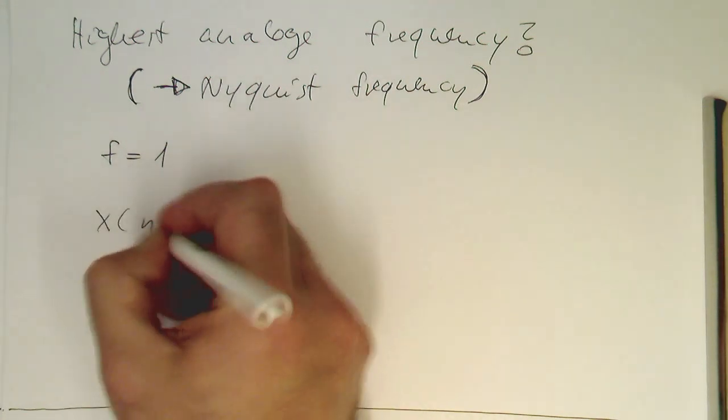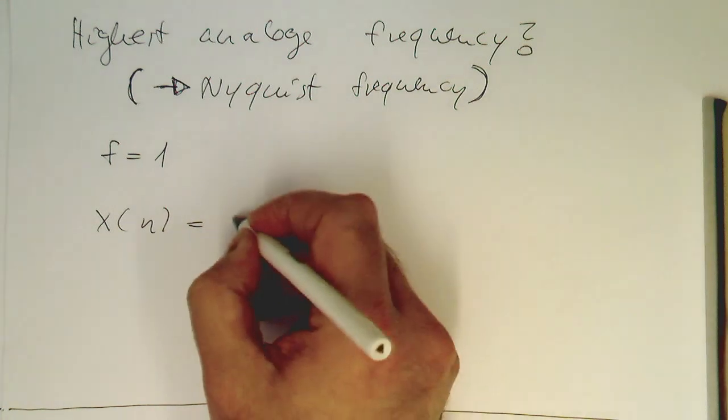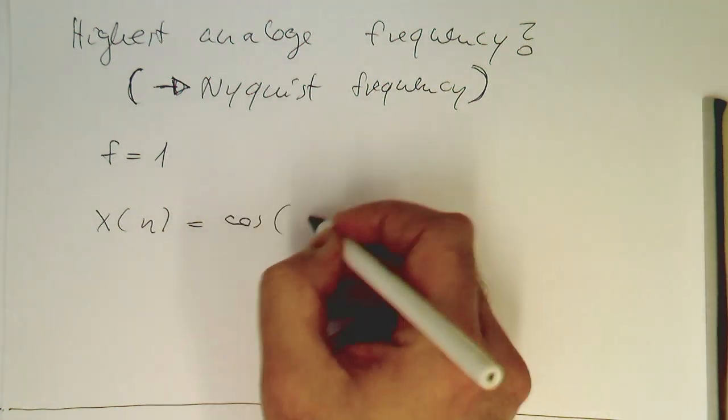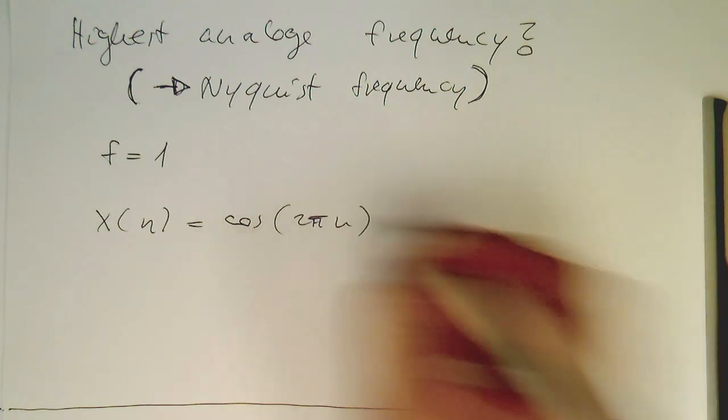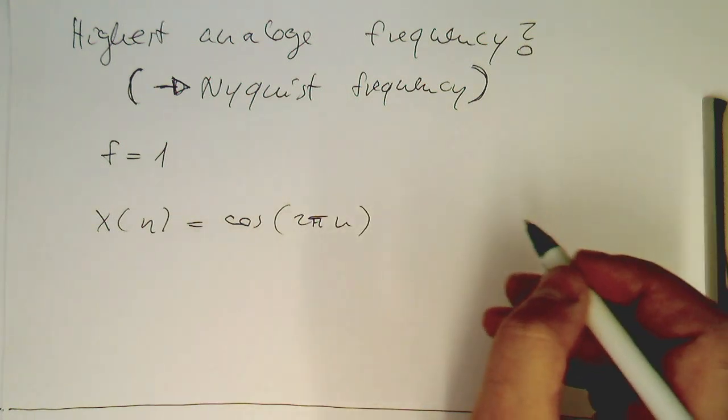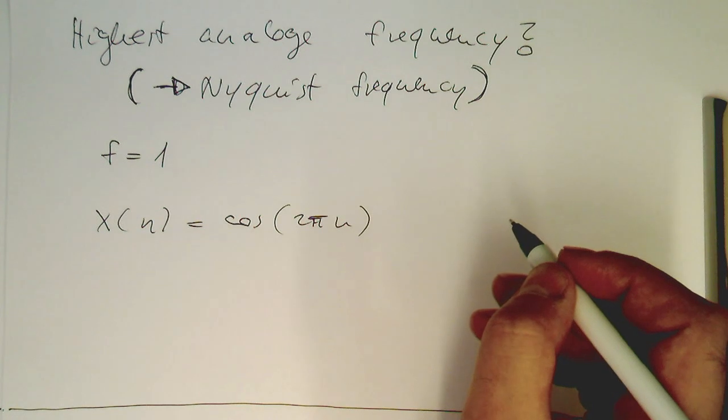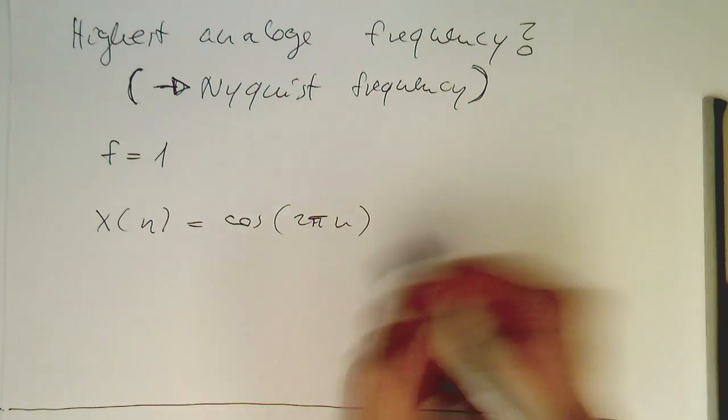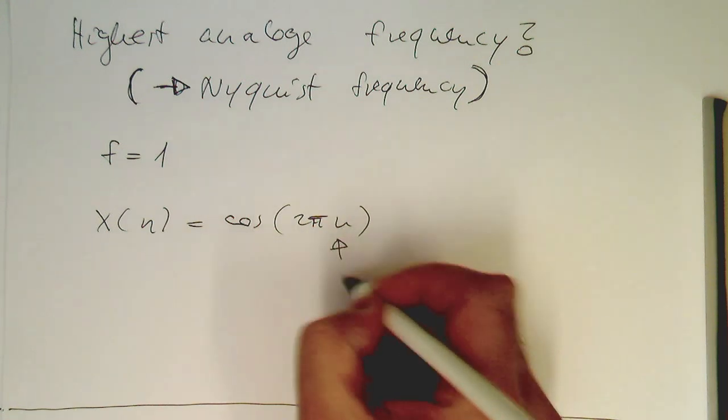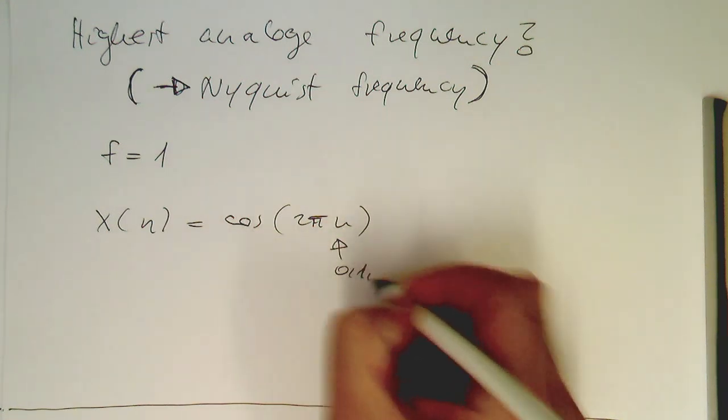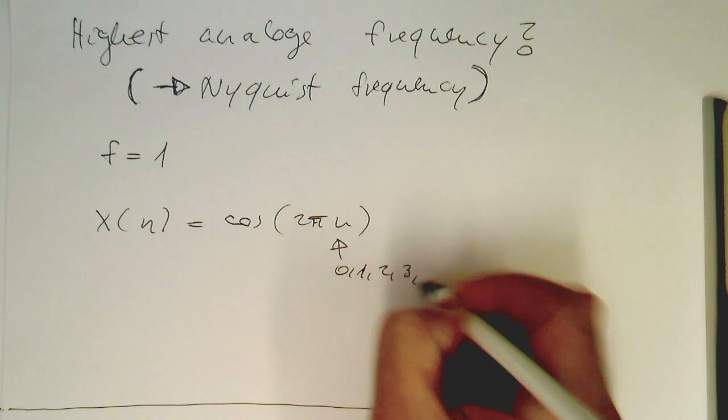So then our cosine wave turns into 2 pi n. So what we're getting for normalized frequency of 1 out there. So what is the result of this? So n is only natural number, so that's 0, 1, 2, 3 and so on.